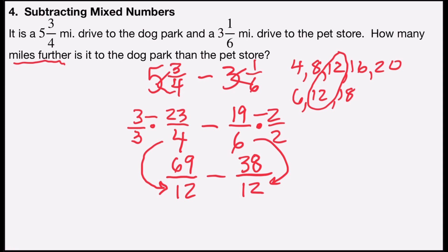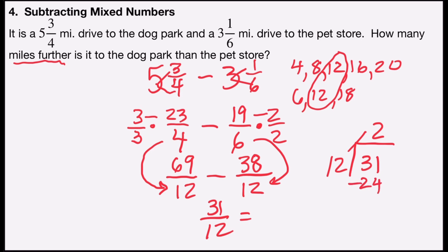Now that the denominators are alike, I just subtract the numerators. Sixty-nine minus thirty-eight is thirty-one over twelve. Now I'll rename that back into mixed number form. Twelve divides into thirty-one two full times — two times twelve is twenty-four — and thirty-one minus twenty-four leaves a remainder of seven. So thirty-one over twelve equals two and seven-twelfths.